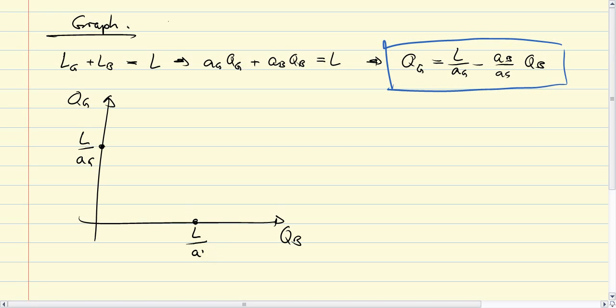And vice versa, we have a point here, L over AB. We can connect these two and get a downward-sloping linear function with a slope of minus AB over AG.